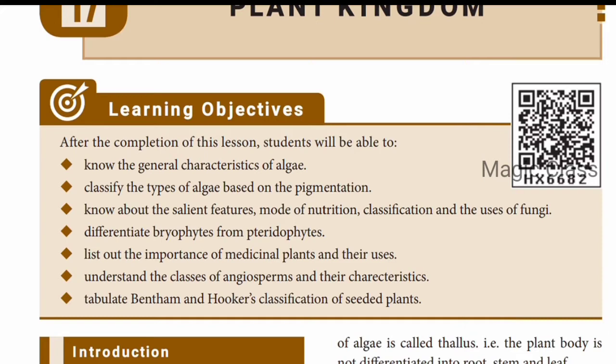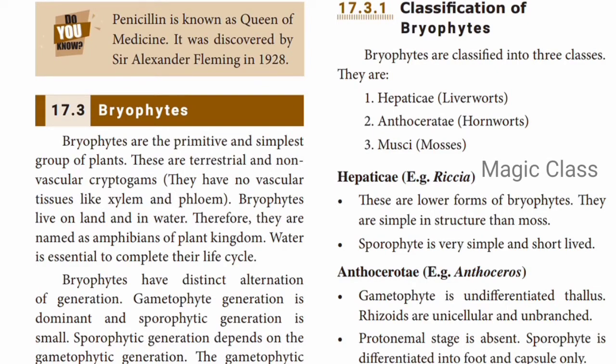Bryophytes are the primitive and simplest group of plants. They are terrestrial and non-vascular cryptogams — they do not have xylem and phloem. Bryophytes live on land and in water. That is why they are called the amphibians of the plant kingdom, because water is essential to complete their life cycle.